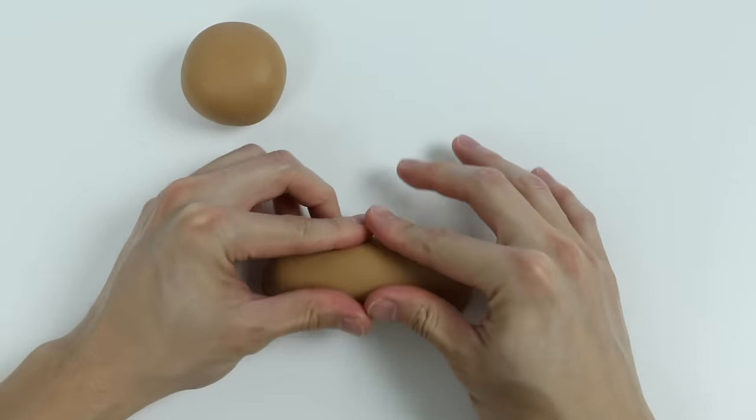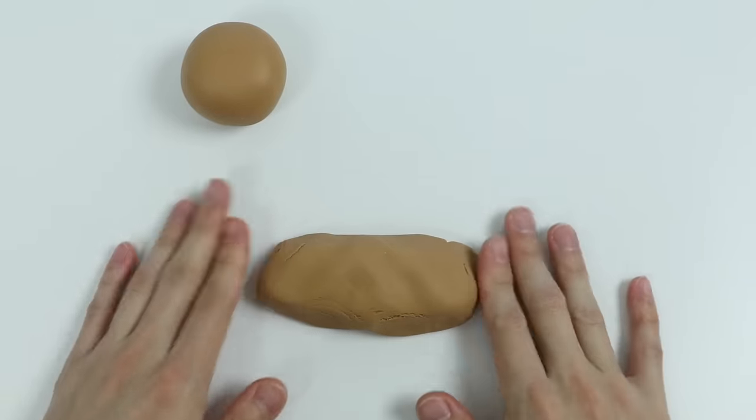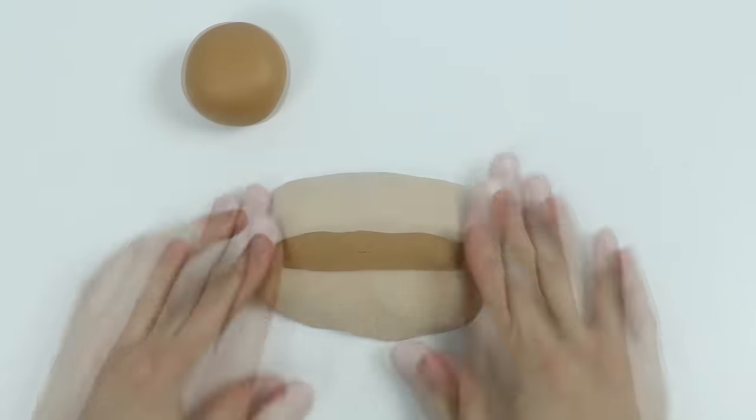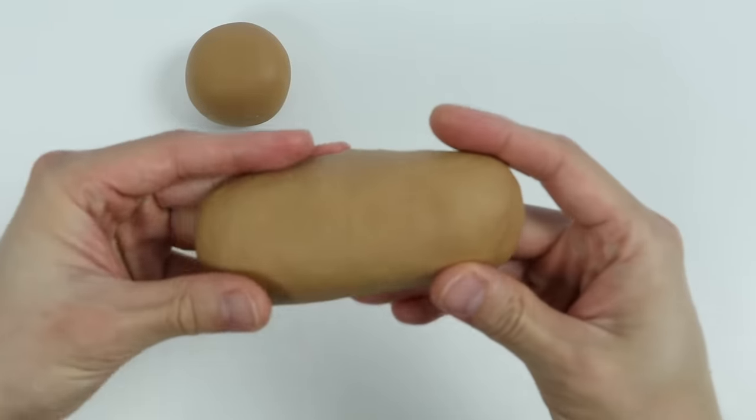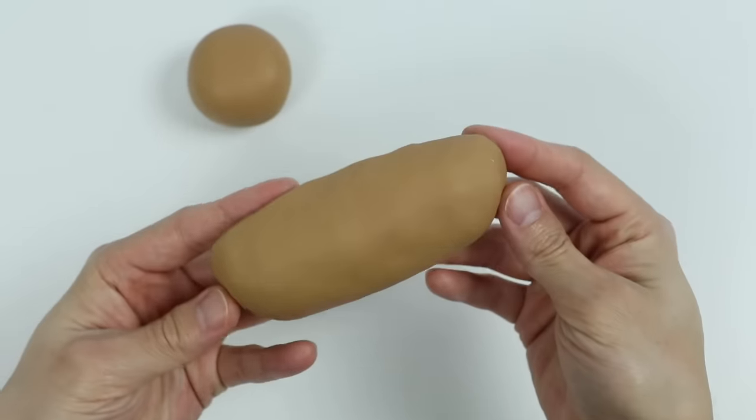Once you get that, you want to flatten the sides and the top to make it a bread-like shape. All right, we have one side of our sandwich roll right here.